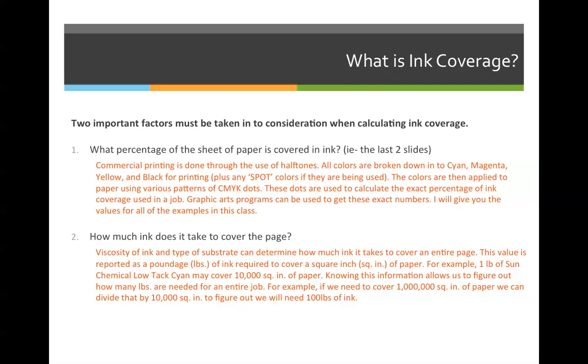So if you're going to print, let's talk about screen printing for a second. Let's say I'm printing a shirt, and the shirt's blue, and I'm going to screen print a red logo on it. I would use red ink because it's only one color as opposed to making that red out of cyan, magenta, yellow, and black. The colors are then applied to paper using various patterns of CMYK halftone dots. These dots are used to calculate the exact percentage of ink coverage used in a job. Graphic arts programs like Adobe InDesign can be used to get the exact numbers. However, for this class, I will always give you the percentage.